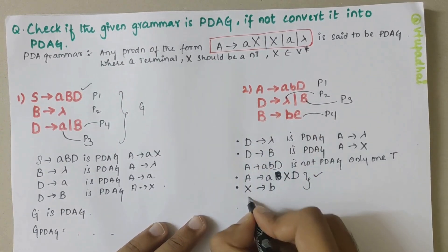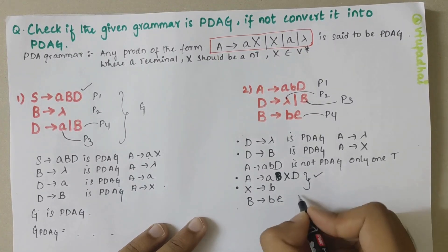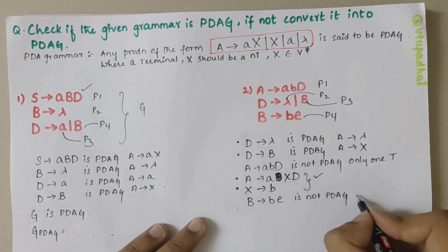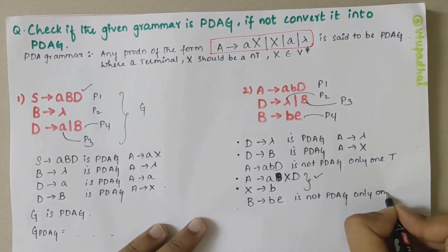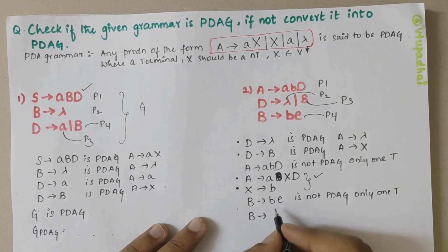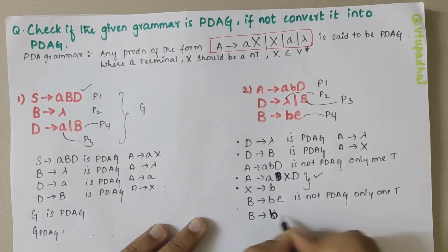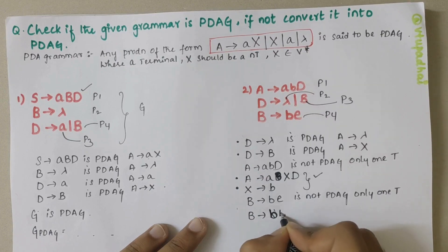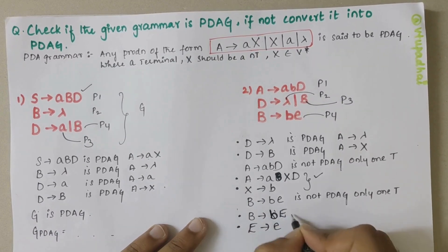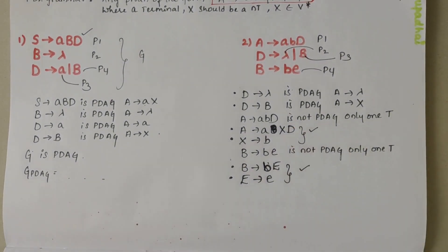B derives BE is again not PDAG because there has to be only one terminal at the start. So we write B derives small 'b' followed by capital E, and add E derives small 'e'. These two now obey the PDAG condition.